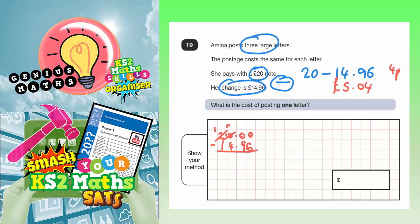So, cross out this ten and make that a nine. Make this one into a ten. Cross out the ten, make that into a nine, and make this one into a ten. Now, we can do it.